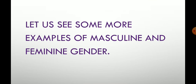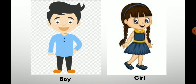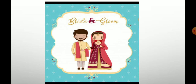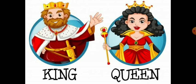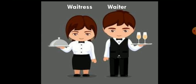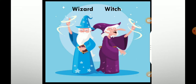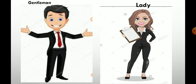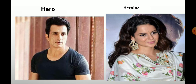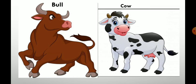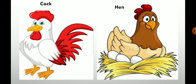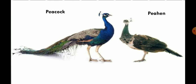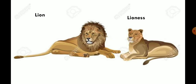Let us see some more examples of masculine and feminine gender. Boy — girl. Groom — bride. King — queen. Waiter — waitress. Wizard — witch. God — goddess. Gentleman — lady. Hero — heroine. Bull — cow. Cock — hen. Peacock — peahen. Lion — lioness.